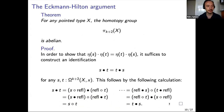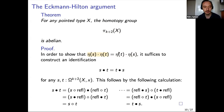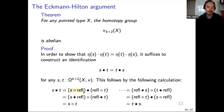Now we can use this to give the Eckmann–Hilton argument and prove that homotopy groups from level two onwards are abelian. First, since we're working in a set-truncated type, it suffices to do this for elements of the form η(s) and η(t). We need to show s · t = t · s. The left-hand side: the new concatenation operation satisfies two unit laws because it's defined by refl, so we can use those unit laws to rewrite the expression.